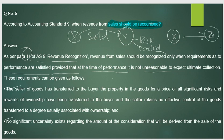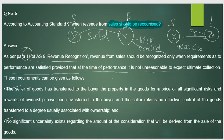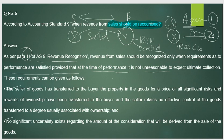For example, if X Limited sells goods to Y Limited, once transferred, the entire risk is with Y. But if goods are transferred to Z Limited and risk still remains with the seller — that is not a sale, that is an agency arrangement, like a consignment where the relationship is between owner and agent.